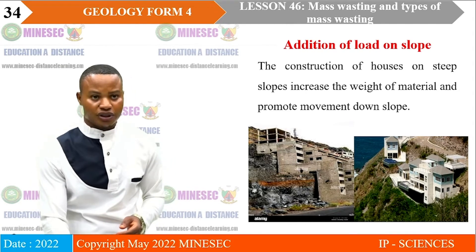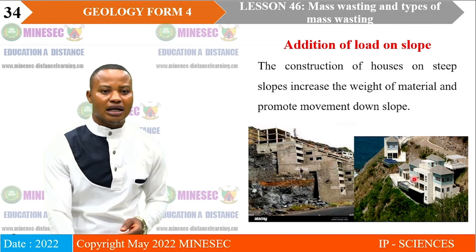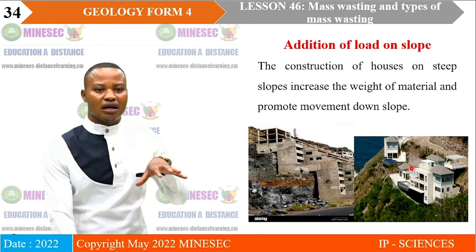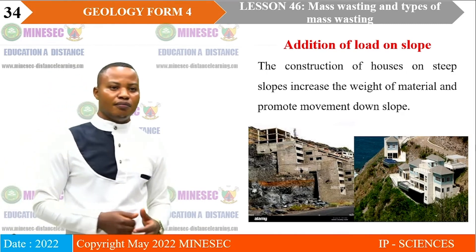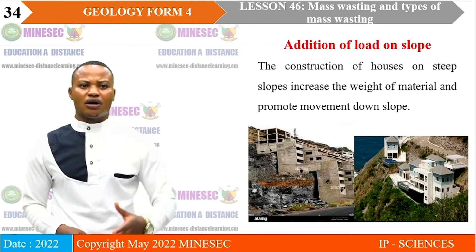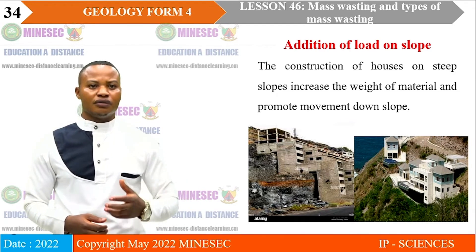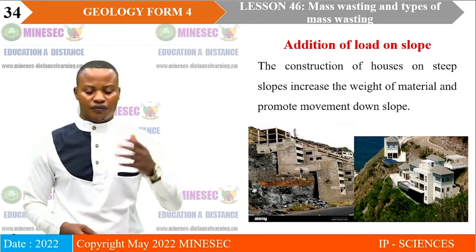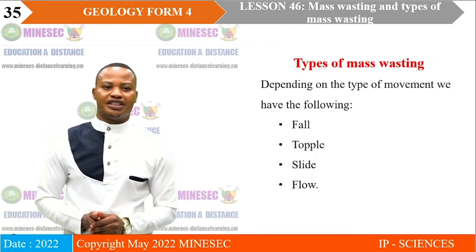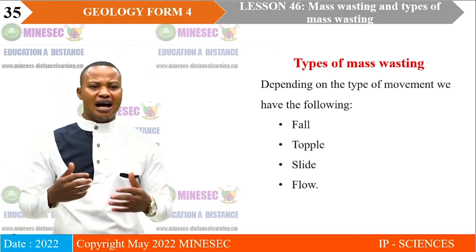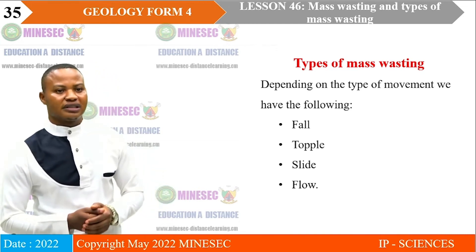The last anthropogenic cause is addition of load on slopes. Construction of houses on steep slopes renders the soils heavier and facilitates movement downslope under gravity. So those were the causes of mass wasting: predisposing causes, triggering causes, and anthropogenic causes. Now let us look at the types of mass wasting. Depending on the type of movement, we can have fall, topple, slide, or flow.